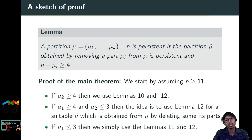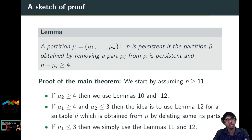Finally, if μ₁ ≤ 3 as well: if 3 occurs twice then (3,3) is persistent and we conclude; if 2 occurs at least twice the same holds. If both occur at most once, then 1 must occur at least six times, and the partition (1^6) is persistent. Combining these cases via the reduction lemma, μ is persistent.